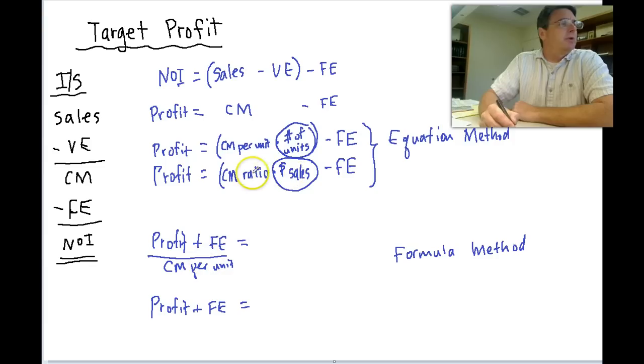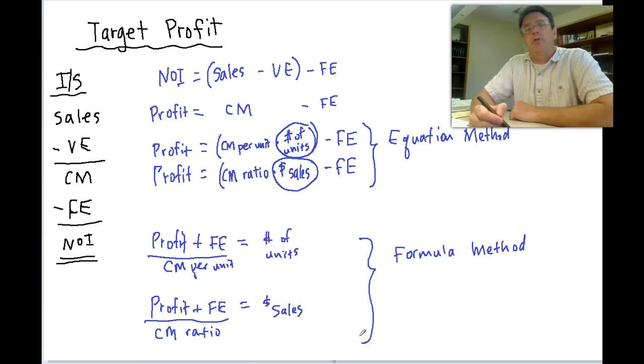On the bottom one contribution margin ratio we need to move over. So we're going to have to divide by contribution margin ratio. So now all that's left on this side is number of units in the top formula and dollars of sales in the bottom formula. We're going to call that the formula method.